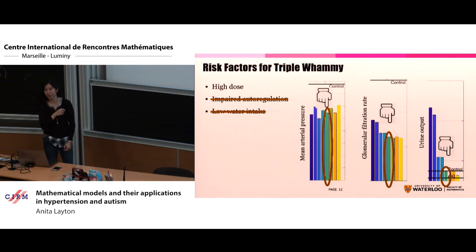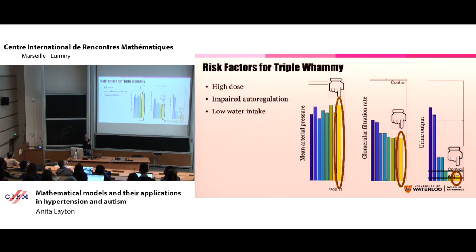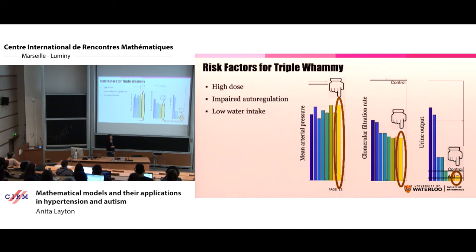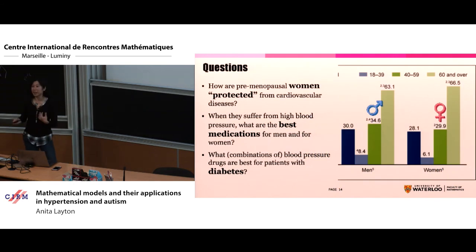What if you have all three risk factors? You're taking a lot of the drug, your kidney somehow doesn't remember how to auto-regulate, and you're not drinking enough water. In that case, your blood pressure is lower — that's okay. Your filtration is quite low also. And your urine output is almost dangerously low. So these are the risk factors that make quite a bit of difference. There are other risk factors — if you throw them in, that would be the patient who's going to get really bad kidney injury.